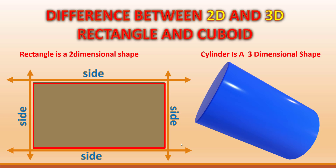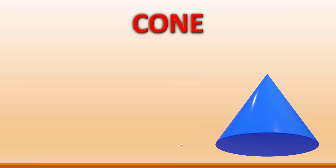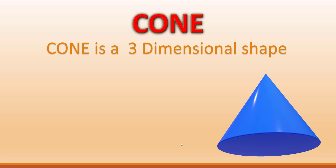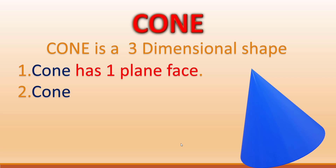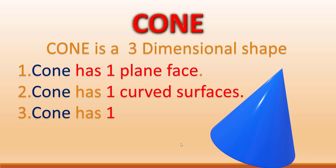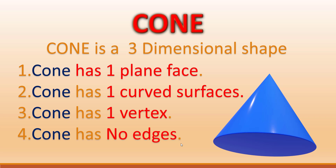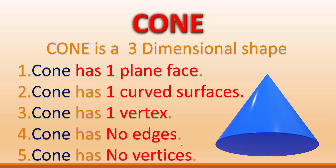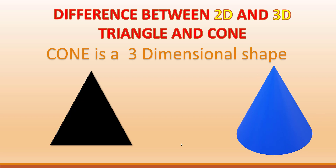In 3D shapes we can see three dimensions. Cone is a three-dimensional shape. The cone has one plane surface, one curved surface, one vertex, and no edges.